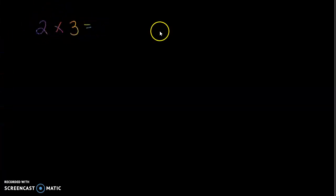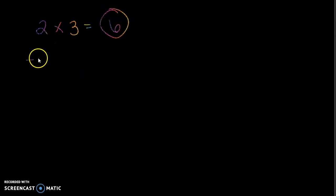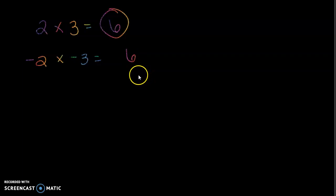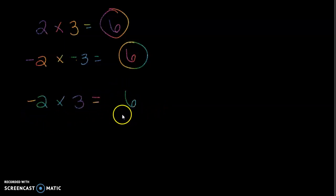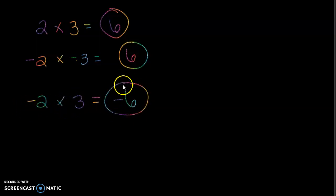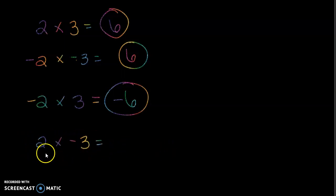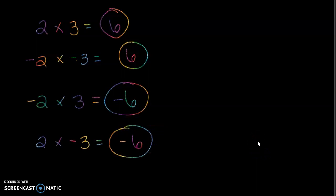Two times three: multiply like normal — same signs, positive answer. Easy. Negative two times negative three: multiply like normal, two times three is six. Same signs — positive six. What if I did negative two times positive three? Multiply like normal, two times three is six. They have different signs, so my answer is negative six. It would work the same if we did positive two and negative three: two times three is six, and they do have opposite signs, so my answer would be negative six. Multiplication and division works very much like that.